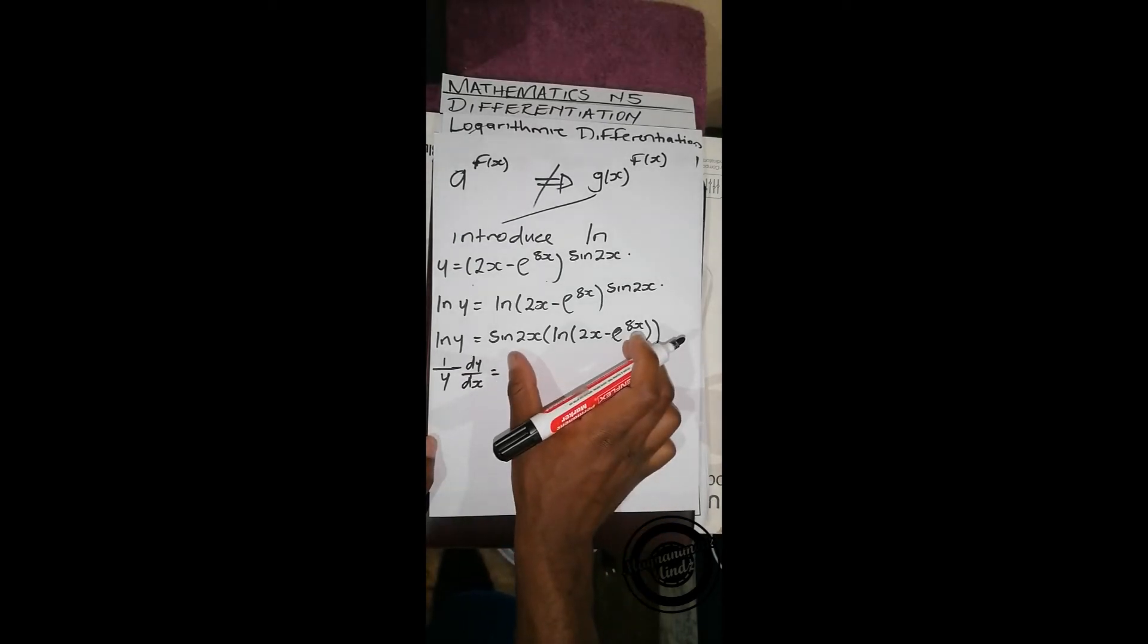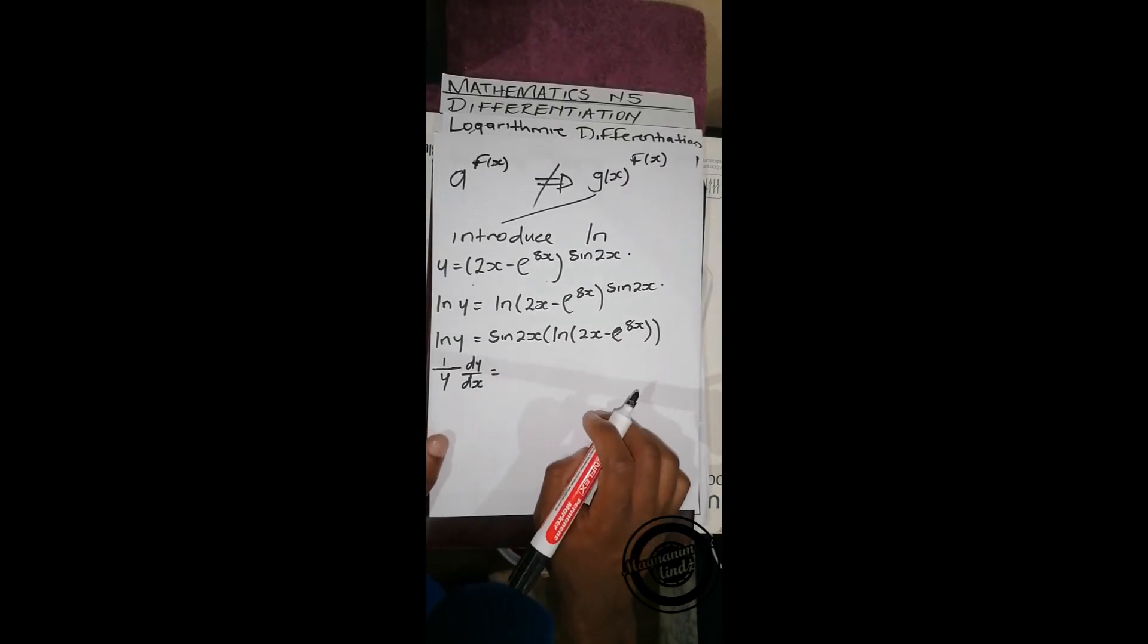This side, we'll make use of the product rule, since this function is multiplying this function.